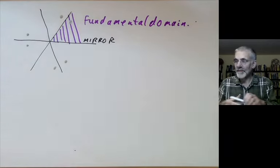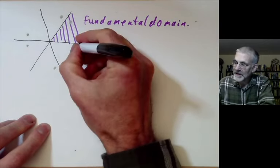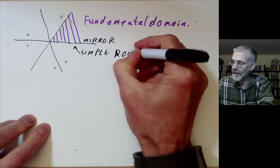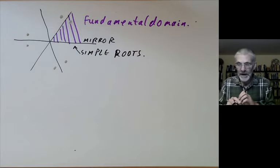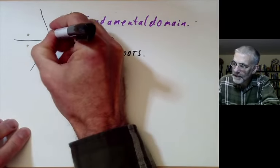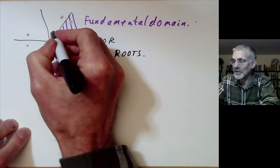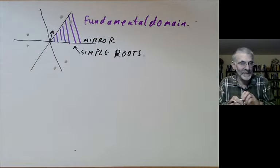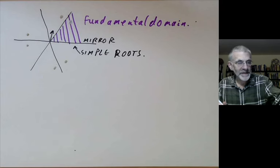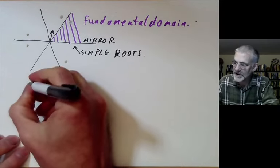The mirrors that bound this fundamental domain are called the simple roots — or rather, they correspond to the simple roots. Strictly speaking, the simple roots are little vectors orthogonal to these hyperplanes. Coxeter found a very neat way of drawing pictures of reflection groups by drawing what is called the Coxeter diagram.